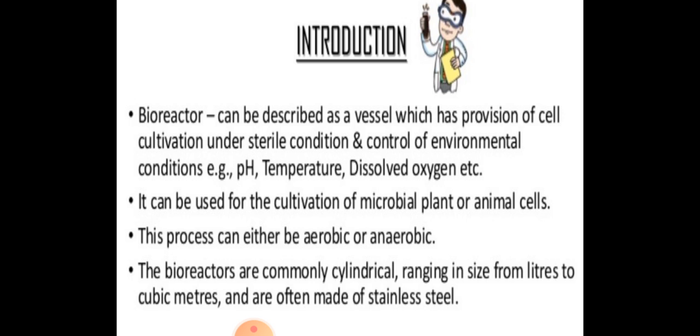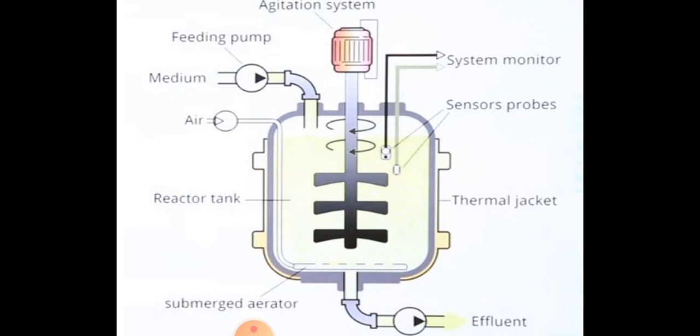Now basically bioreactors are of two types - one is stirring type and one is sparged stirred tank bioreactor, of which the commonly used bioreactor is the stirred tank. Now, this figure you are seeing is a figure of stirred tank reactor bioreactor.